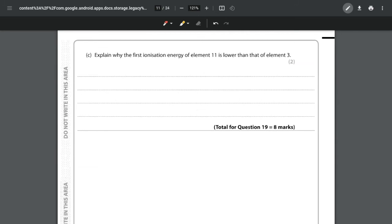For part C we want to explain why the first ionization energy of 11 is lower than that of element 3. In other words we're comparing sodium to lithium. Sodium is in period 3, it's got 2, 8, 1. And lithium is in period 2, it has an electron arrangement of 2, 1. So we can see that we have got an extra quantum shell.